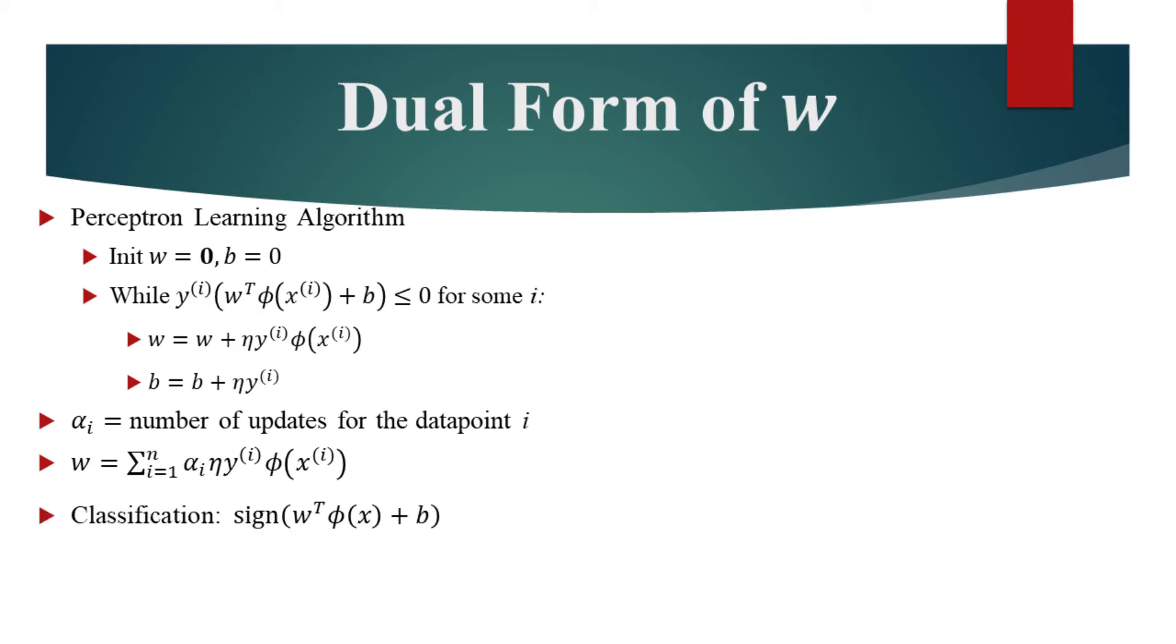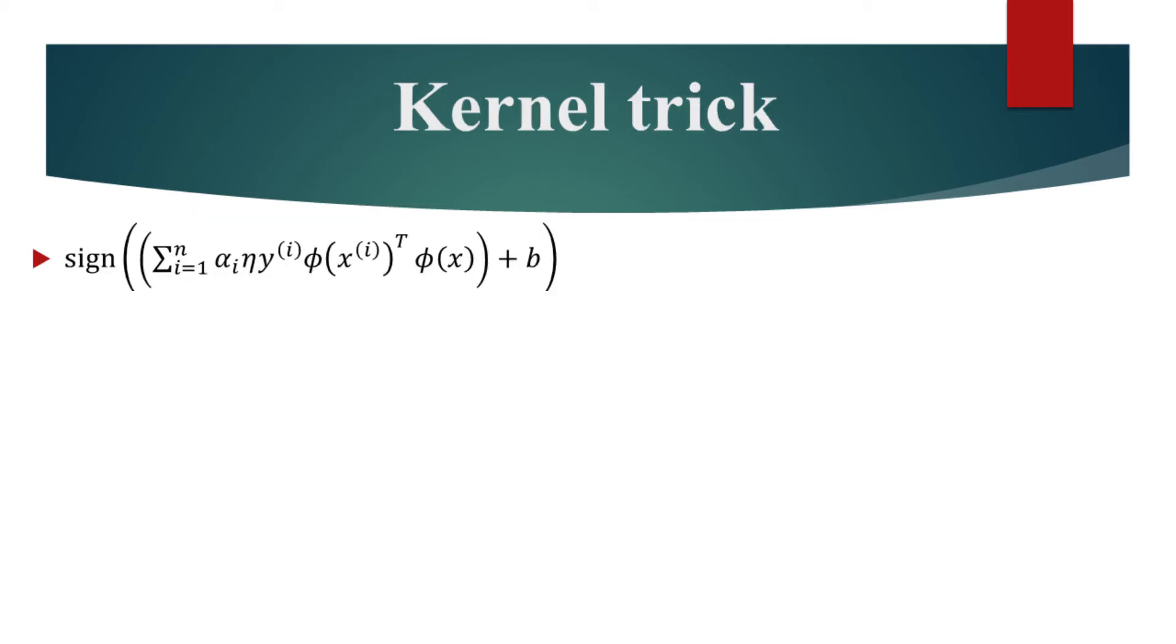When classifying a point x, we take the dot product between the vector of weights and a phi of input x. Using the alpha notation, this can be rewritten as follows. We can now move phi inside the parentheses and this is where we will use the kernel trick. Inside the summation, we have the dot products between the phi of the data points and the phi of input x.